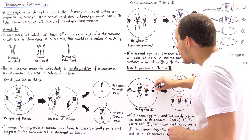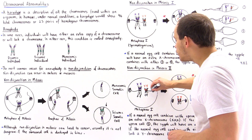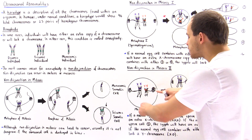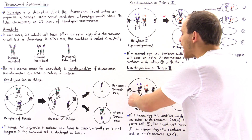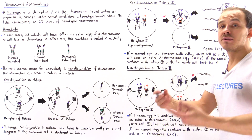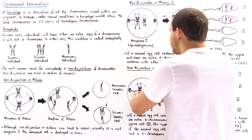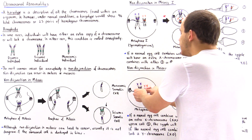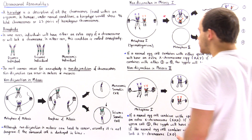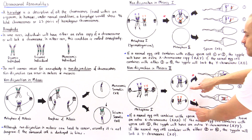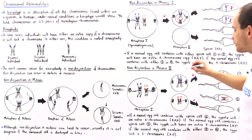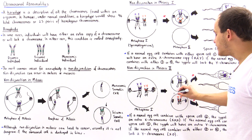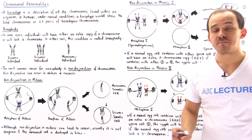Let's assume that non-disjunction does not take place during meiosis I. So during meiosis I, we have the normal segregation process taking place. These fibers are able to extend, they form connections with these chromosome pairs, and they move apart to form two normal cells — cell number one and cell number two.